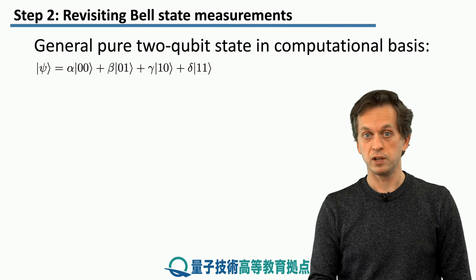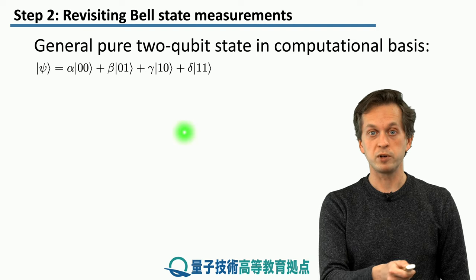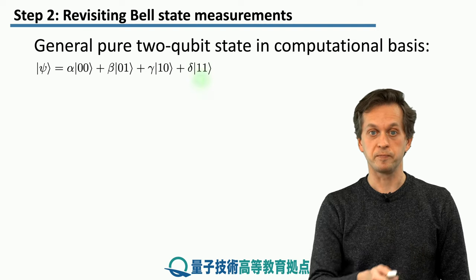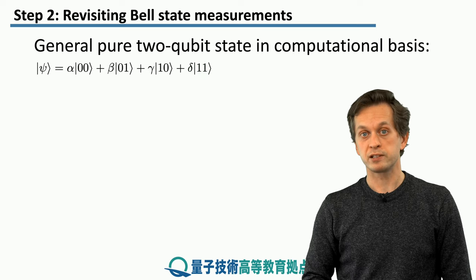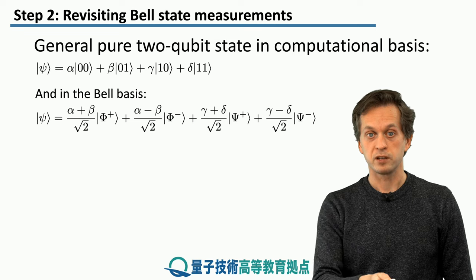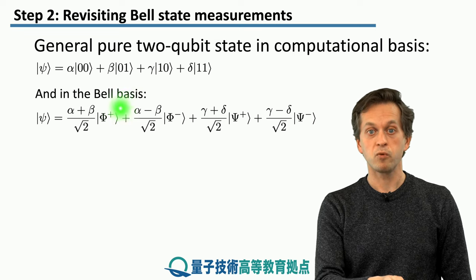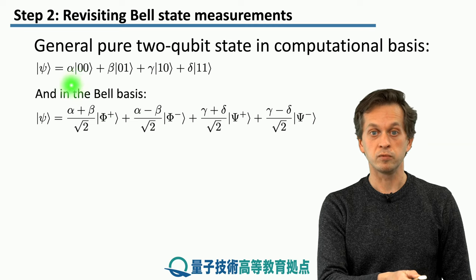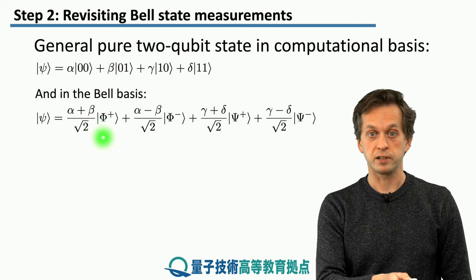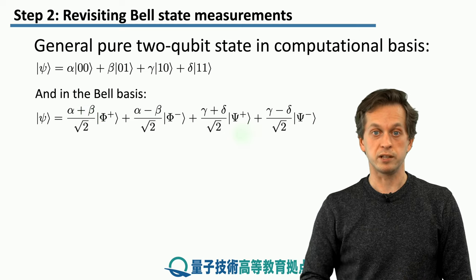Let's consider a general pure two-qubit state in the computational basis, with probability amplitudes given by alpha, beta, gamma, and delta. We saw in previous lessons how to rewrite this state in the Bell basis. Now it's a superposition of all four Bell states, where the probability amplitudes have changed. For example, the probability amplitude for state Phi plus is alpha plus beta, and so on for the other Bell states.